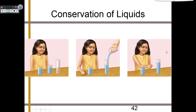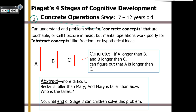The third stage is the concrete operational stage, taking place between 7 and 12 years old. During this time, children can understand and problem-solve for certain concrete concepts that are touchable or that they can picture in their head, but mental operations work poorly for abstract concepts like freedom or hypothetical ideas. For example, if A is longer than B and B is longer than C, the child can figure out that A is also longer than C — it's in front of them and obvious. But abstract questions like 'Becky is taller than Mary and Mary is taller than Susie, so who is the tallest?' — a child struggling through the concrete operational stage would not be able to solve this until the end of this stage.